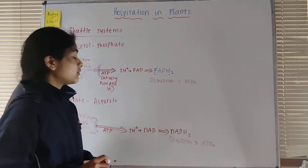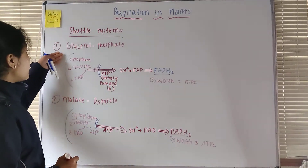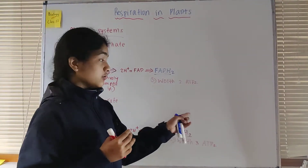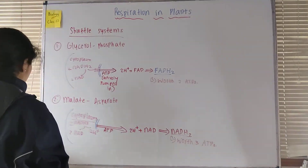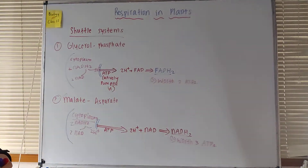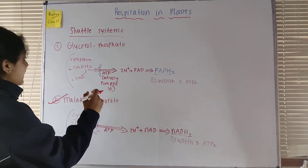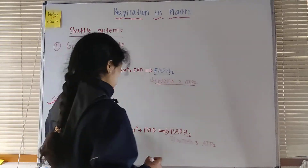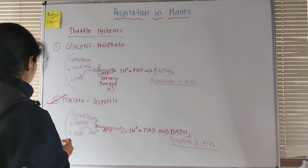The NADH2 formed in the malate aspartate shuttle is worth three ATPs. The key difference between the two systems is: glycerol phosphate shuttle produces two ATPs via FADH2, while malate aspartate shuttle produces three ATPs via NADH2. Therefore the malate aspartate shuttle system is more effective and efficient.